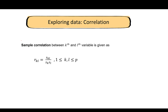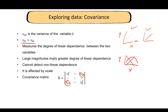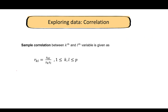Next we look at correlation. Since covariance is affected by scale, which is a drawback, this can be overcome using correlation. The correlation between the kth and lth variable is the covariance between them divided by the standard deviation of the kth variable times the standard deviation of the lth variable. Note that the denominator contains standard deviations, not variances.